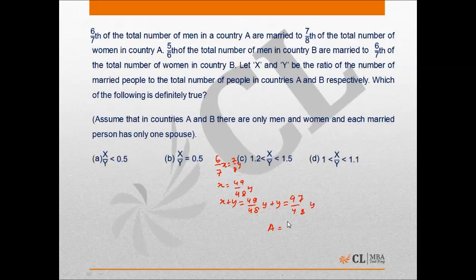The total number of married people in country A: 7 by 8 of y upon 97 upon 48y where it comes out to be 84 upon 97. Similarly we can calculate value of b and it comes out to be 60 upon 71.